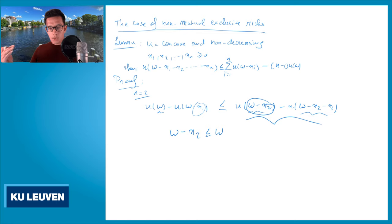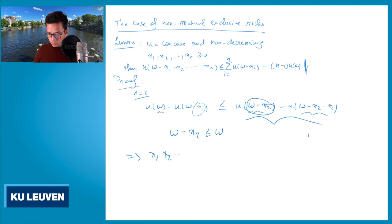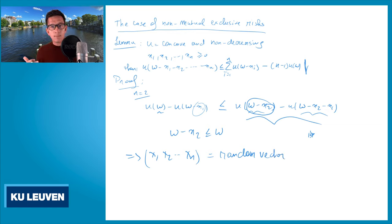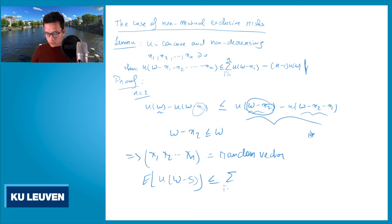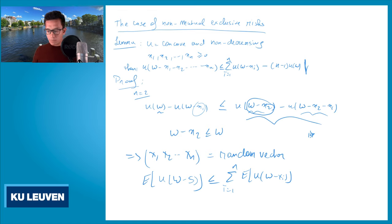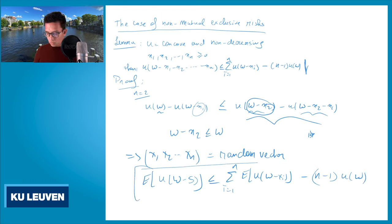You can use the same trick to go from n=2 to n=3 and so on to prove this result. If you use this result, we also find that if x1, x2, ..., xn is a random vector — so these are n losses but not a mutually exclusive vector — then the expectation u(w-s) is smaller or equal than the sum of the expectations u(w-xi) minus (n-1) u(w).